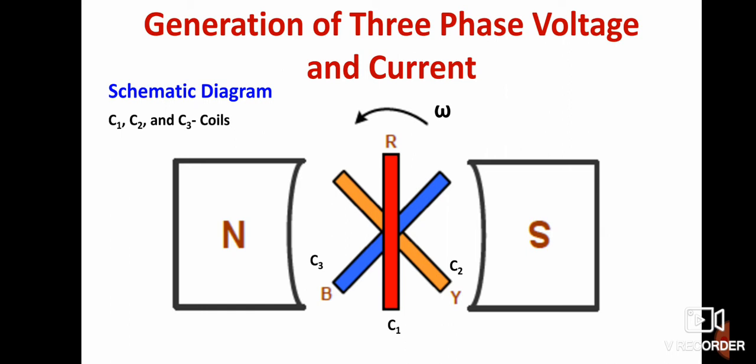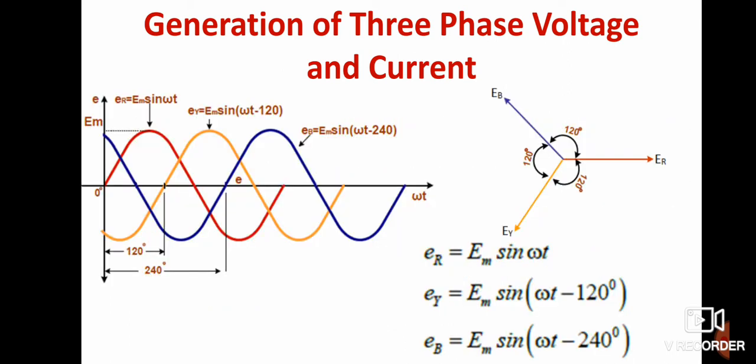Once the circuit is closed, current starts flowing. Sinusoidal waveforms are generated at each conductor. At the R conductor, ER equals EM sin(ωt).